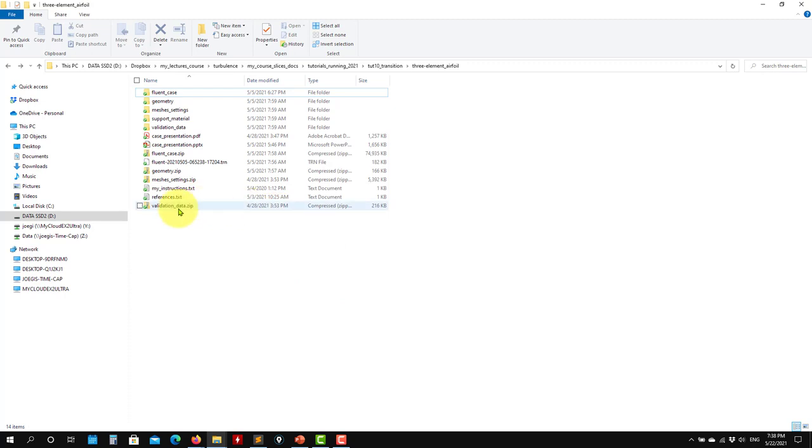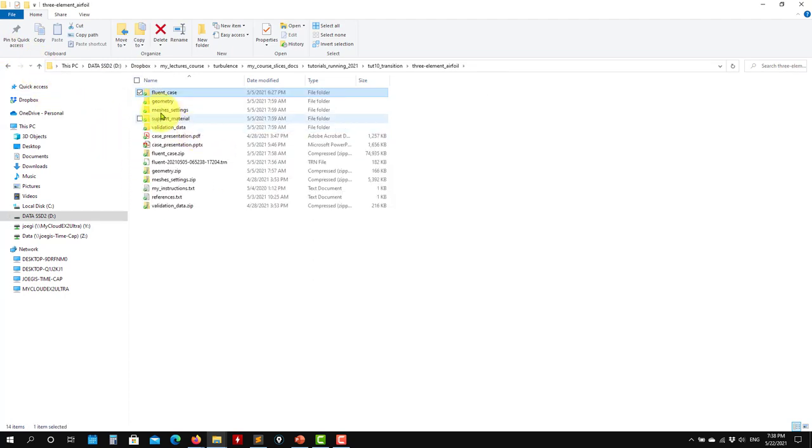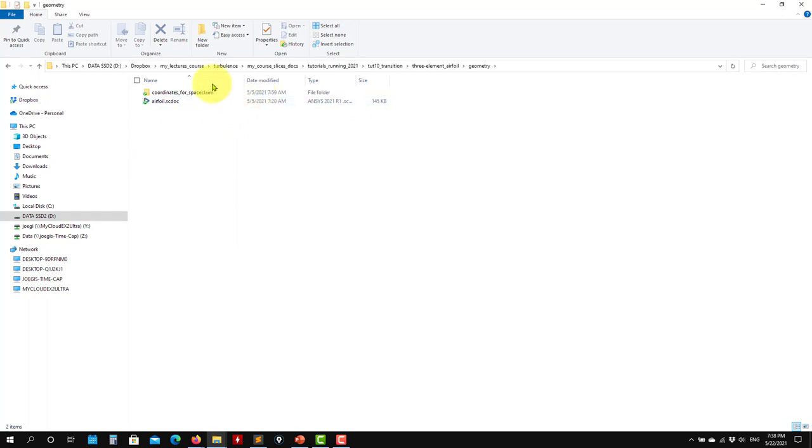As you download the cases, you're going to have the file. Here you see that you have the Fluent case set up to run, ready to run. You have all the files here: validations and outputs. Then you have also a geometry as you want to do your own measures, just to get the dimensions, not where to put or where to do the sampling.